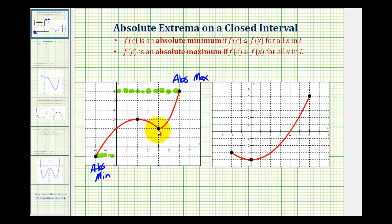Notice how these two points do represent relative extrema, but they are not absolute extrema because there are function values that are greater than this function value here, and there are function values that are less than this function value here. Now looking at the second graph, notice that this relative minimum here is also the absolute minimum because it is the least function value on this closed interval. But the absolute max would occur at x equals six with a function value of positive five.